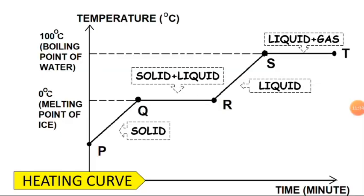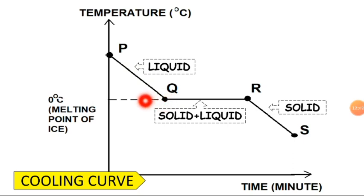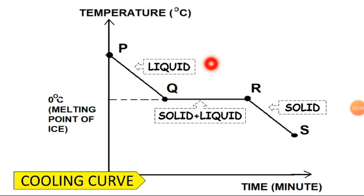The last section covers the cooling curve, which is the opposite of the heating curve. Starting from liquid, when you cool it down, once it reaches zero degrees Celsius — the melting point of ice — it starts to become ice. P to Q is liquid, Q to R is solid and liquid. This is different from and opposite to the heating curve, as you can see in the graph.